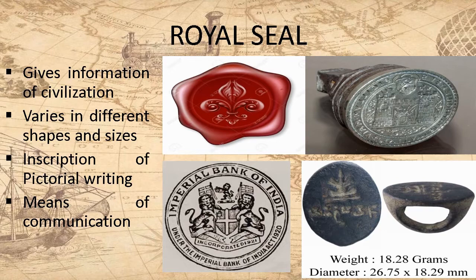Children, let's come to another form of material sources, i.e. seals. Seals give us information about civilization. Some seals have human and animal figures on them. Seals also vary in different shapes and sizes such as rectangular, circular, or cylindrical shapes. The seals even have the inscription of pictorial writing which shows the culture and civilization of a particular period. Seals were used in the earliest civilizations and are important in their archaeology and art history. They are used as a means of communication and identification.